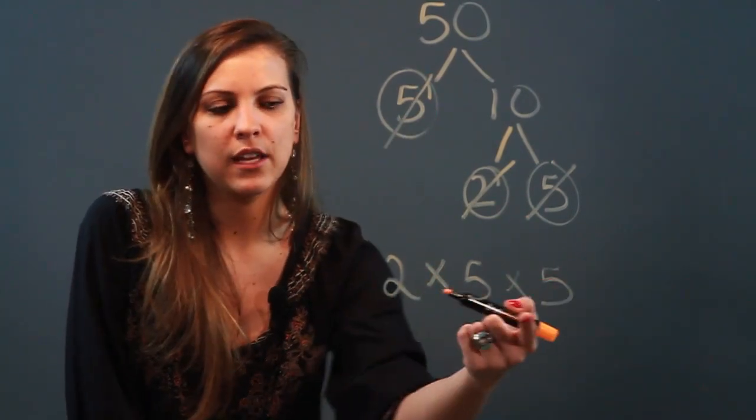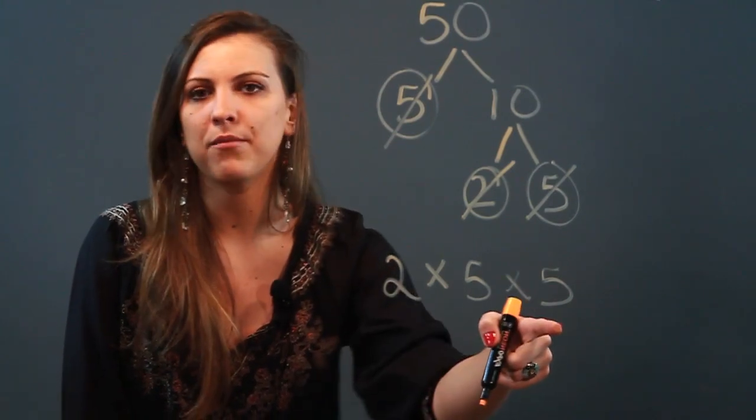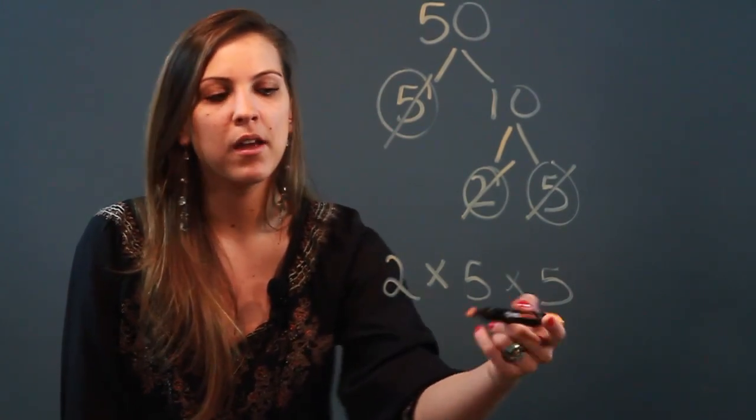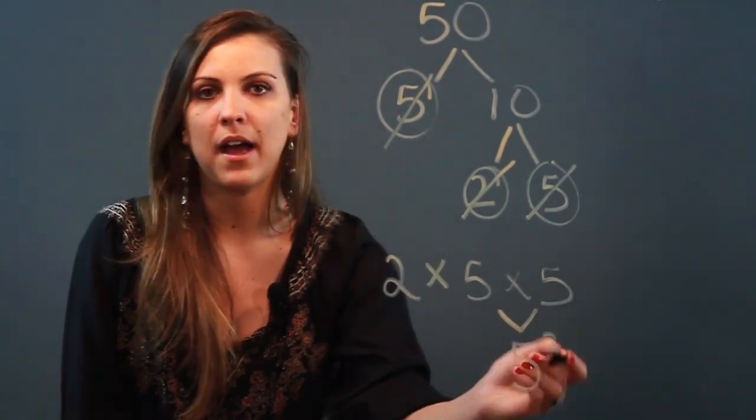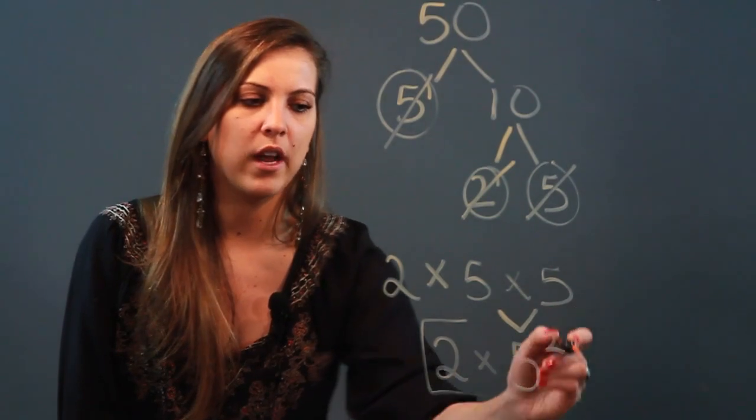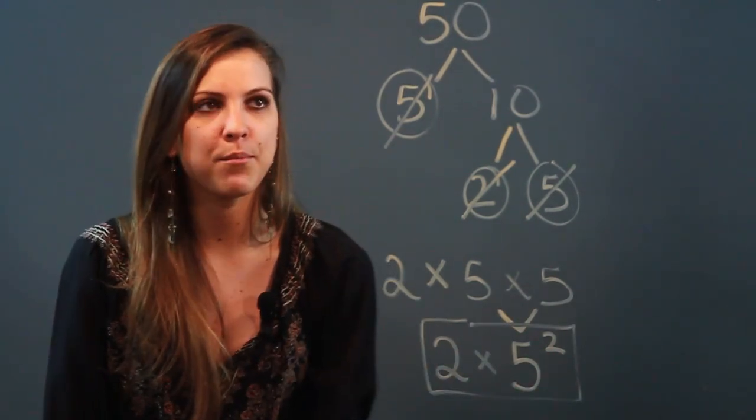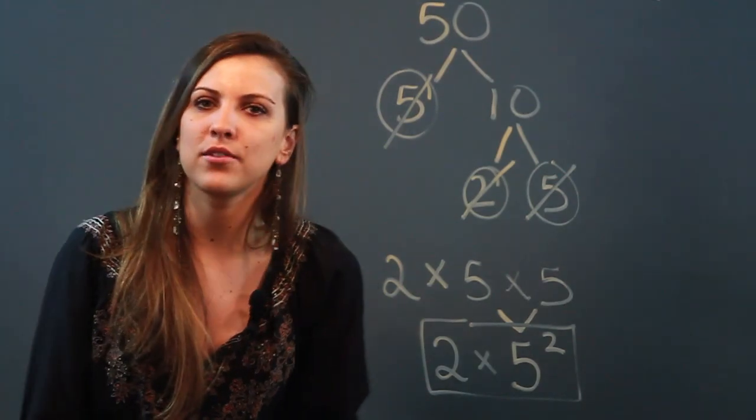The last step is just to take any factor that repeats itself and write it in exponential form. So this is the prime factorization in standard form, but we're going to write it in exponential form. So 5 times 5 is the same thing as 5 squared. So we're going to write 2 times 5 squared. And that is the prime factorization of 50. And that's how you use the factor tree to find the prime factorization.